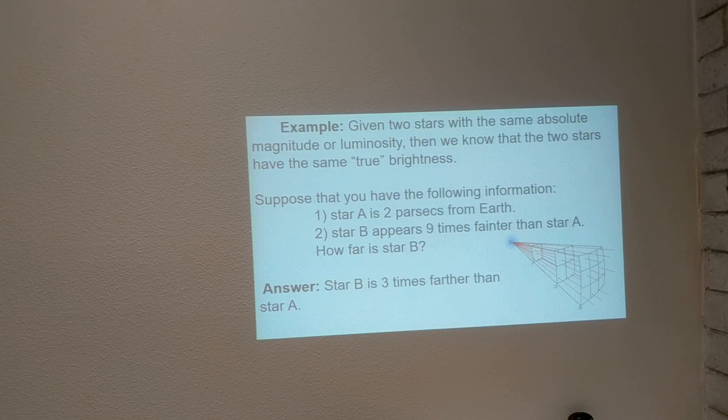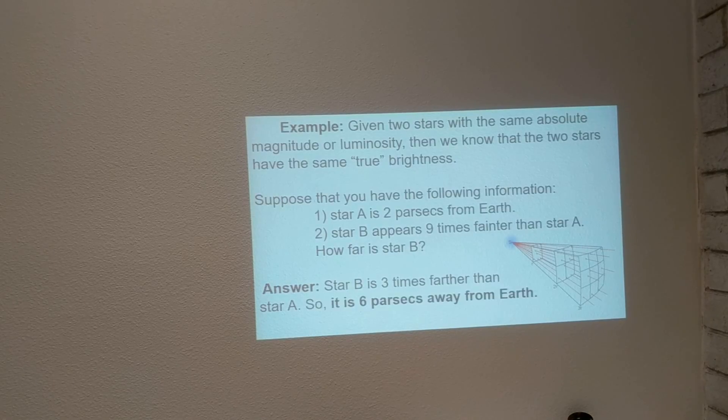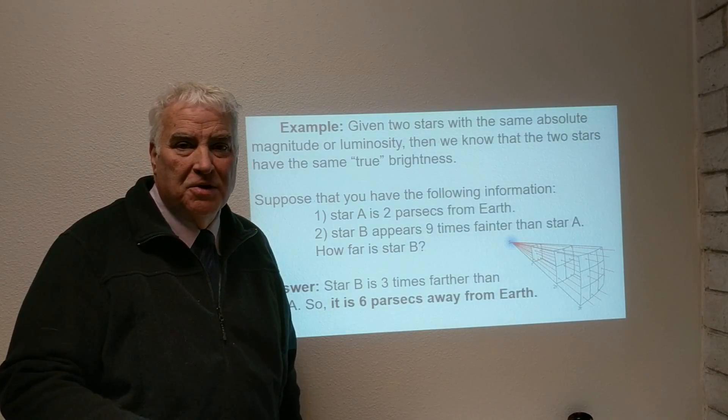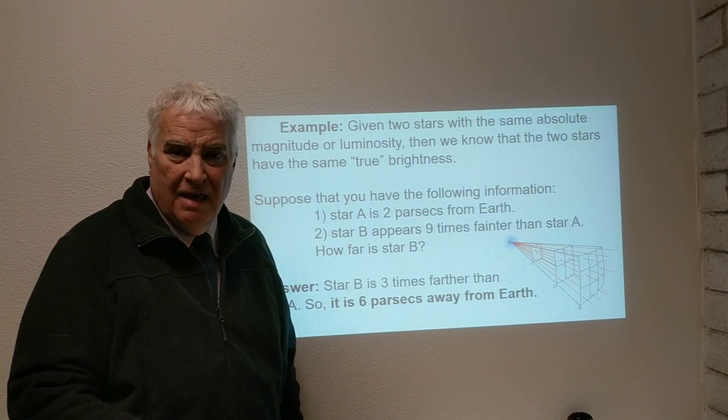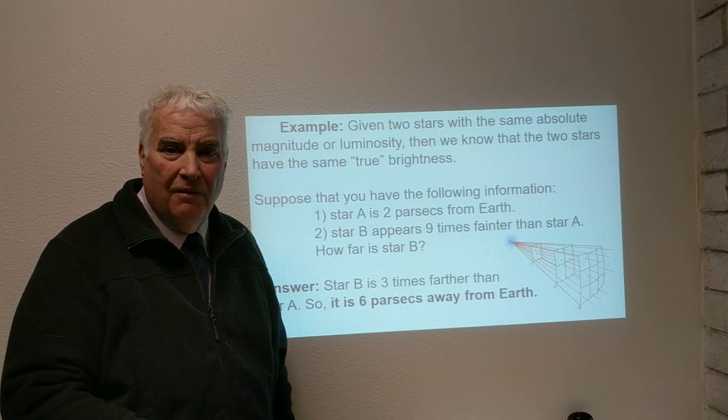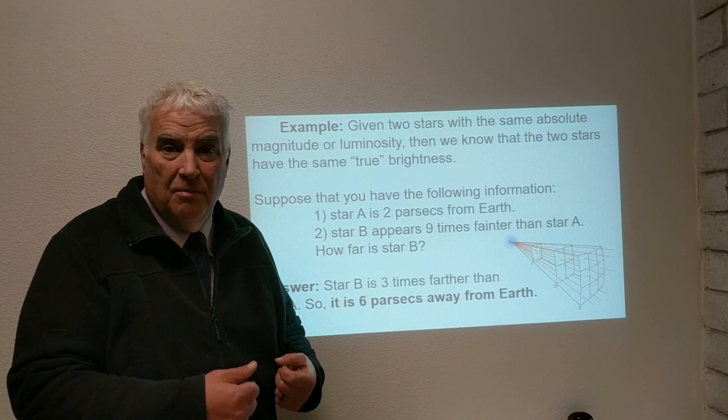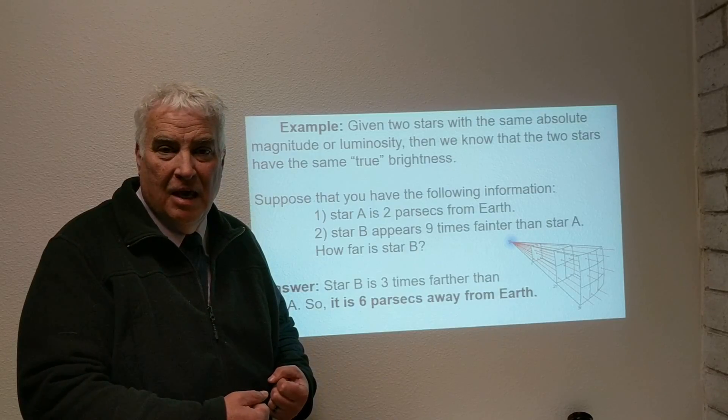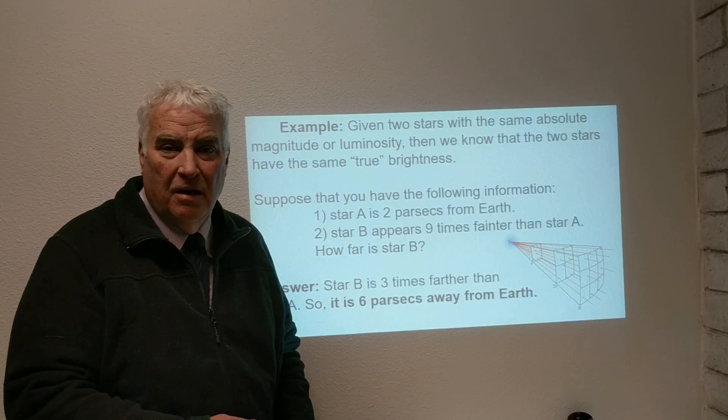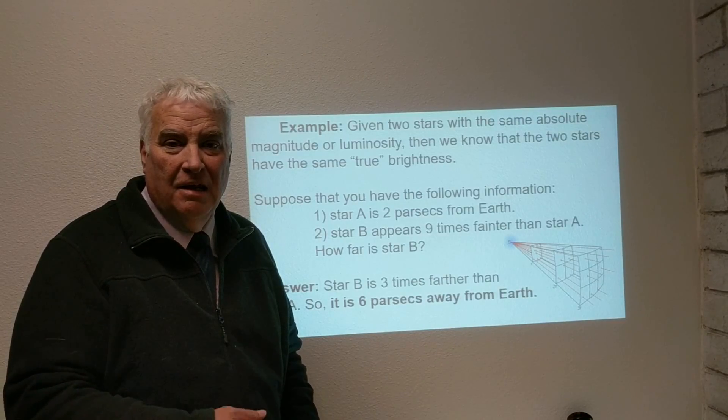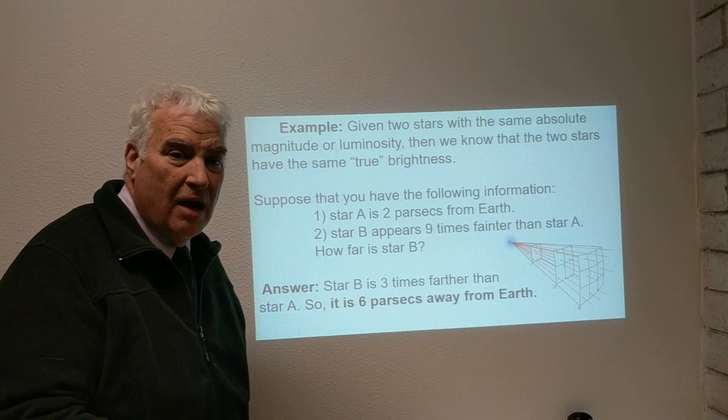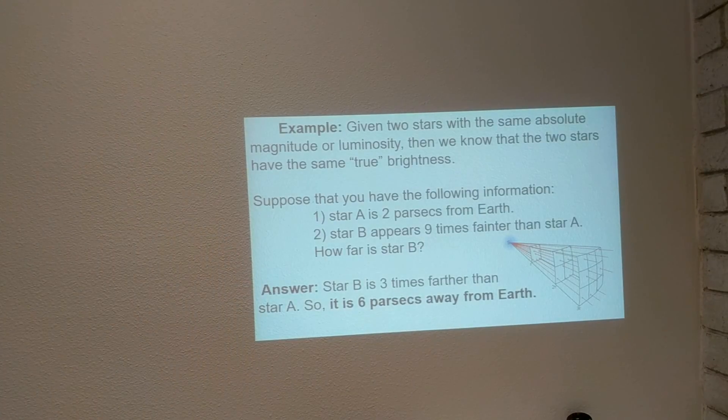Okay, so using this and the fact that a key piece of information here was that both of the stars have the same luminosity. In this case, we can use the inverse square law whenever we have objects that have the same luminosity. Their true brightness is the same, so only the distance determines their brightness as we see it, and that depends on the square of the distance from us to the object.